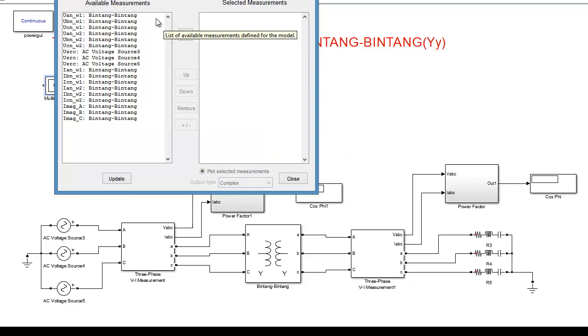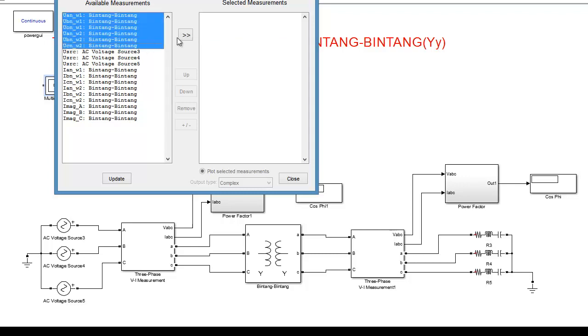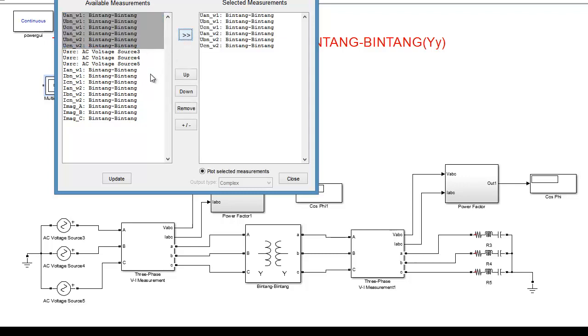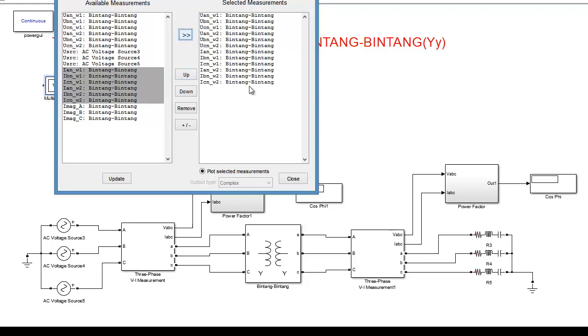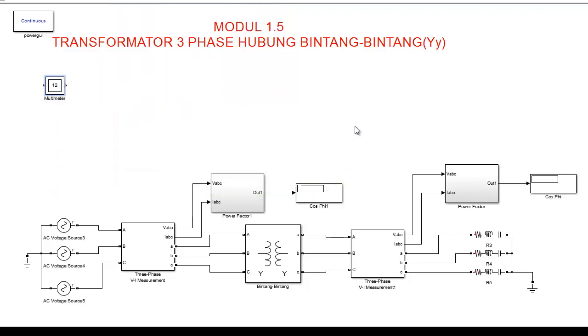Ini juga sama minus 120 di masing-masing fase. Kemudian untuk menghitung parameternya, yang ingin diketahui adalah tegangan di sisi primer ini dan juga arus di sisi primer dan sekunder, berarti dua-duanya nanti biar bisa dilihat. Kemudian ini sudah diklik plot selected measurement biar nanti otomatis.